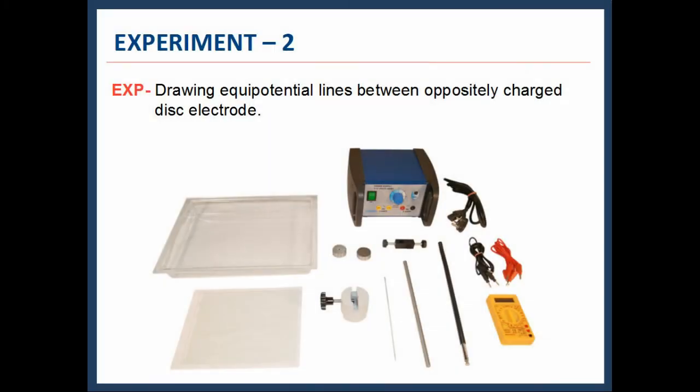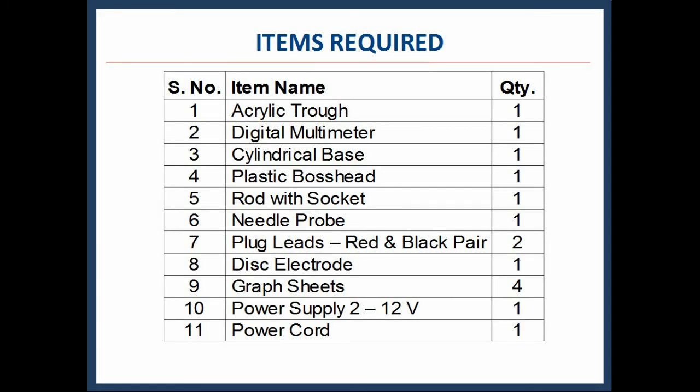In the second experiment, we will draw equipotential lines between oppositely charged disk electrodes. These are the items required to perform the second experiment: acrylic trough.